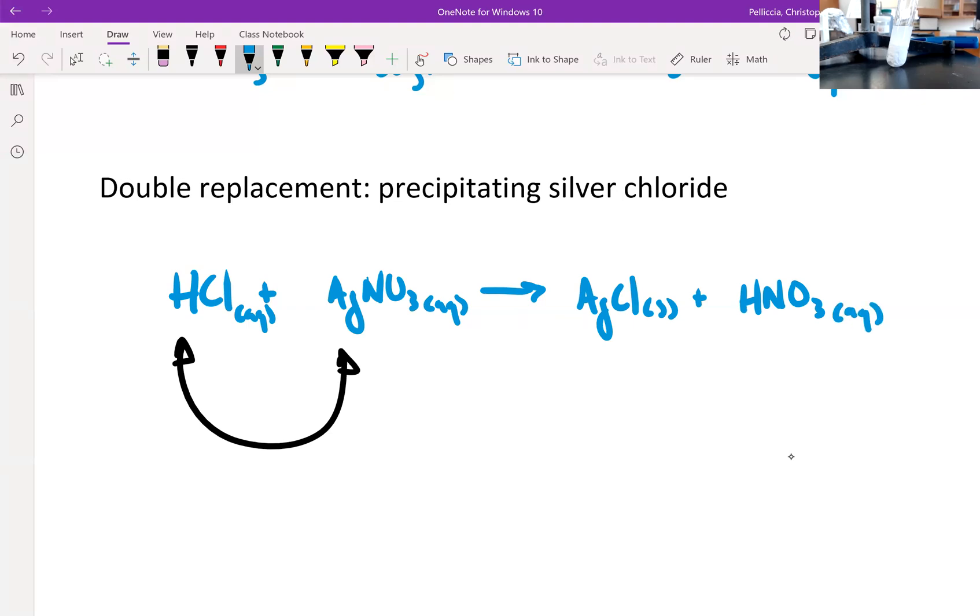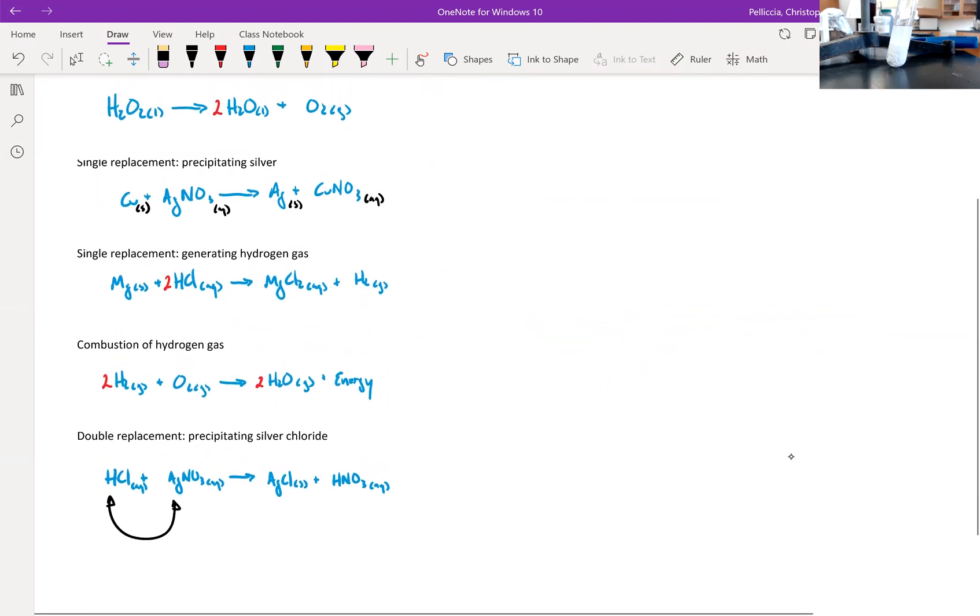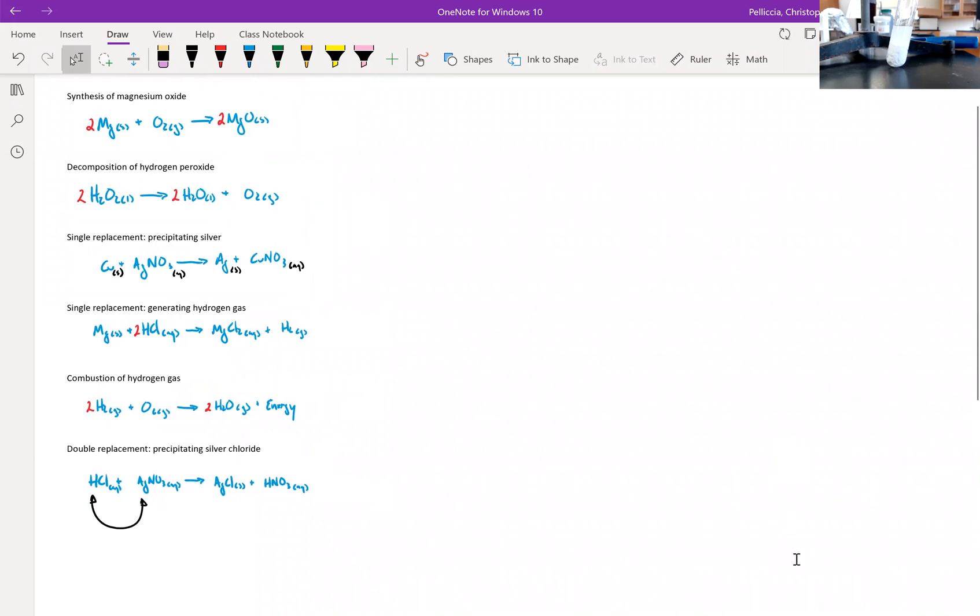Only because I know nitric acid is soluble and I see evidence of a precipitate can I definitively identify silver chloride as the solid precipitate there. If I didn't know that HNO3 or nitric acid was aqueous, I wouldn't know what the identity of that solid precipitate was. All right, well again, thank you for watching and here's some examples of different kinds of chemical reactions.